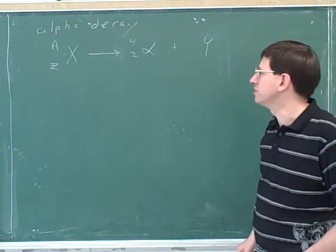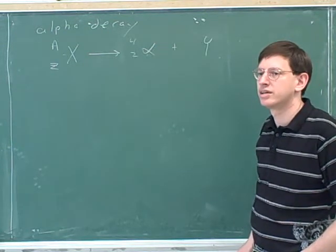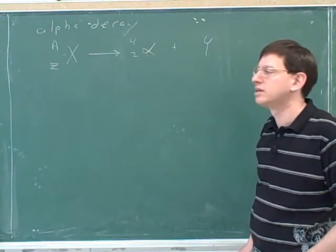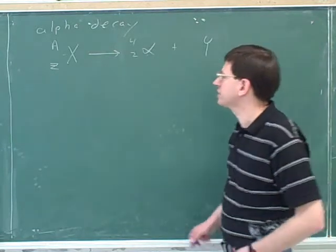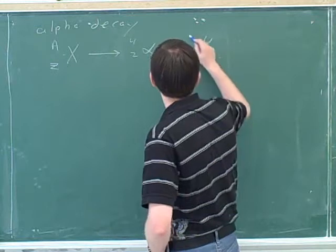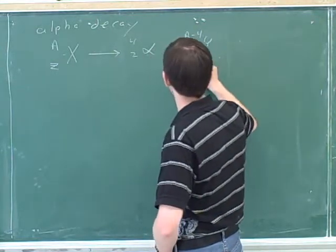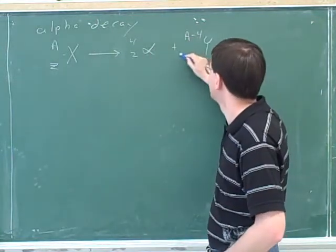If we knew A and Z, I think it would be the difference between the alpha particle and the parent. So what's the exact calculation? A minus 4. And what's the exact calculation that we do to find this number? Z minus 2.